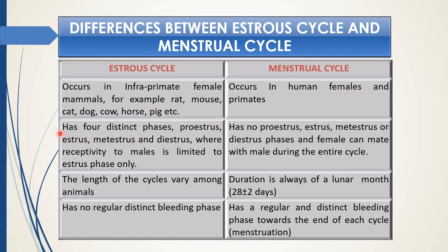In the estrus cycle, there are four distinct phases: proestrus, estrus, metestrus, and diestrus, where receptivity to males is limited to the estrus phase only. But in the case of the menstrual cycle, there are no proestrus, estrus, metestrus, or diestrus phases — females can mate with males during the entire cycle.